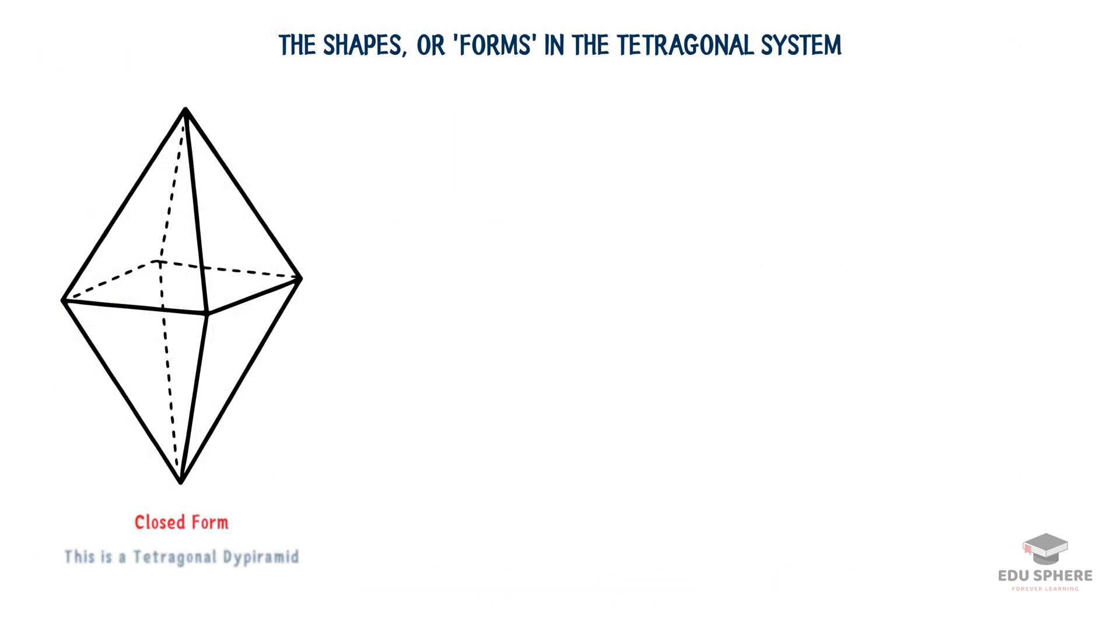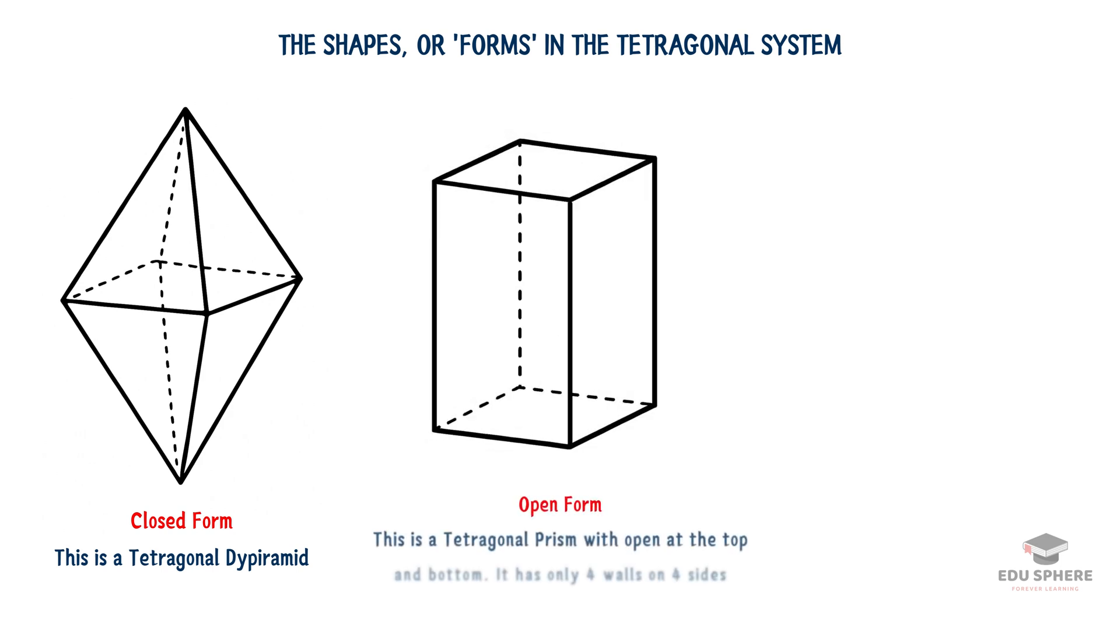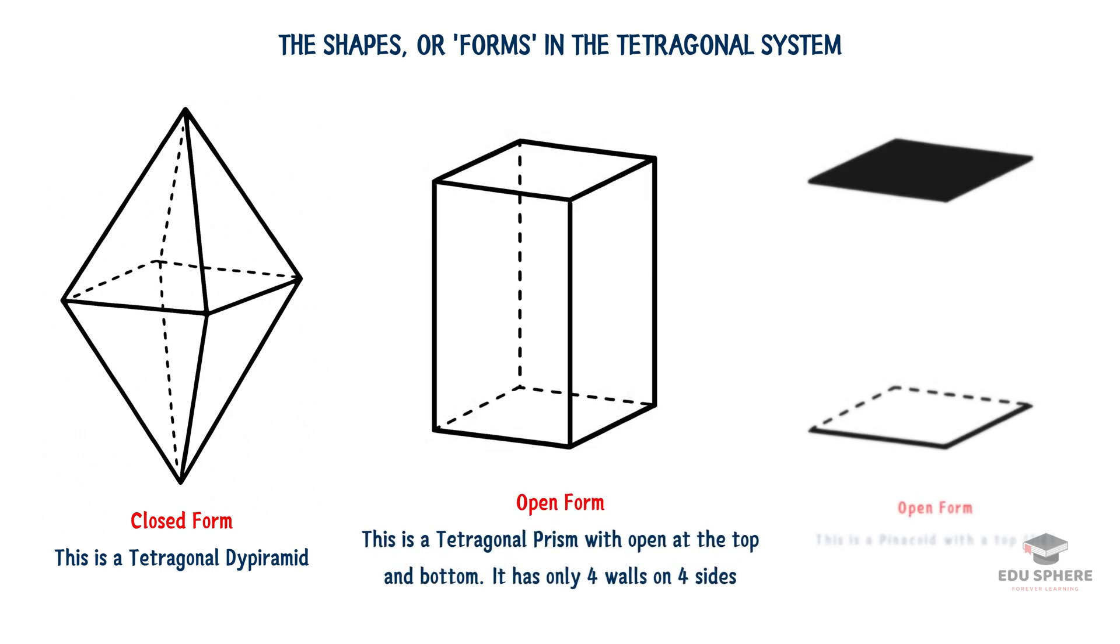The shapes or forms we see in the tetragonal system are often what we call open forms. This means they can't enclose space all by themselves and need to combine with other forms to make a complete crystal. It's like building with a very specific set of Legos.